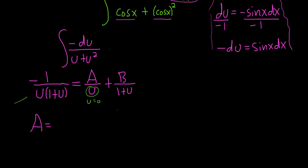So then you come over here to the left-hand side, and you ignore the u, and you plug in 0 everywhere else. So it's negative 1 over 1 plus 0. So that's just negative 1. So a is equal to negative 1.